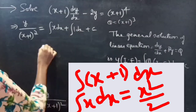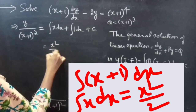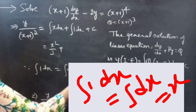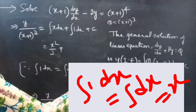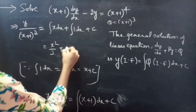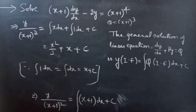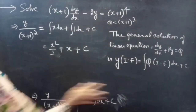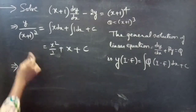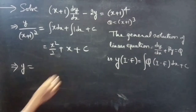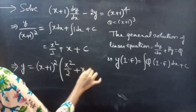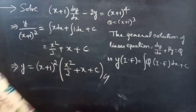This equals ∫ (x+1) dx plus c, which equals x²/2 plus x plus c. Since ∫1 dx equals x, we already have the integral constant c. Then y equals, taking (x+1)² to the RHS, you will get y equals (x+1)² · (x²/2 plus x plus c). So let's complete the problem.